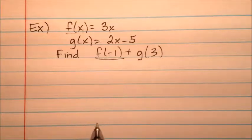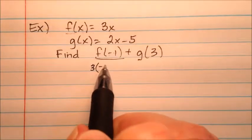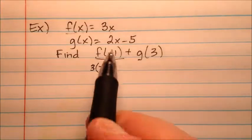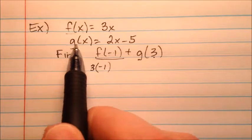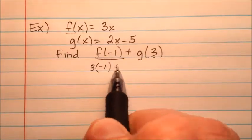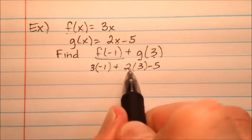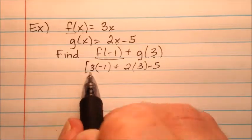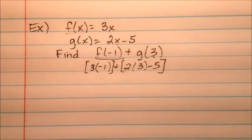So f at negative 1 is 3 times x. In our case, we're going to plug negative 1 in for x. So 3 times negative 1. And then we're going to plug 3 in for g, so 2 times 3 minus 5. You can put brackets around here so you're keeping the operations separate from one another.